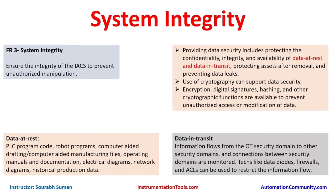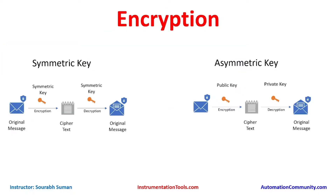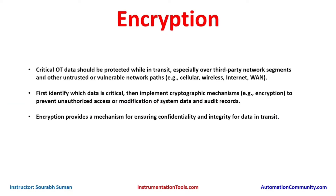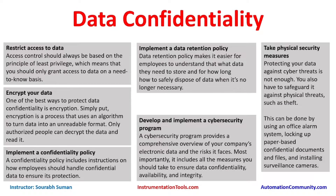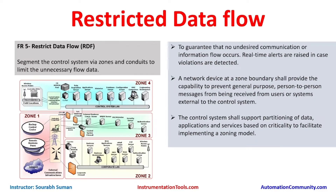We moved to FR3, which is system integrity. Whenever integrity or confidentiality is involved, it comes down to encryption. We learned about two types of encryption: symmetric and asymmetric, and where each should be implemented. Data confidentiality is also about encryption along with other measures like restricting access to data, implementing data retention policies, and developing a cyber security program.